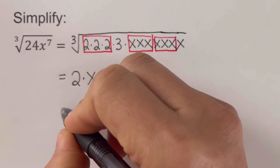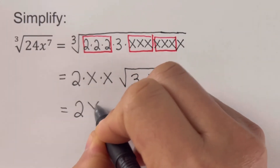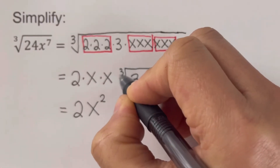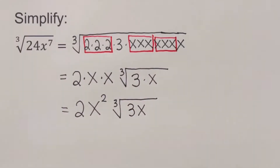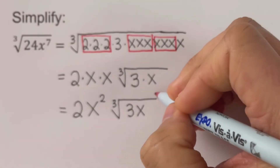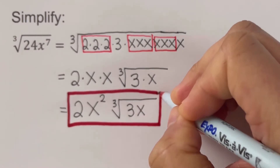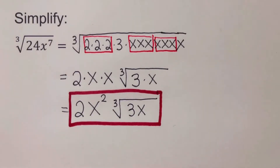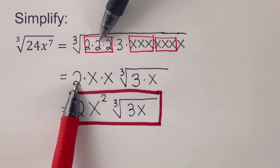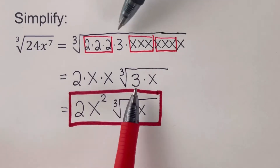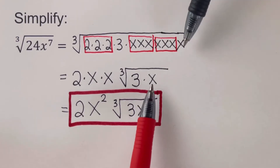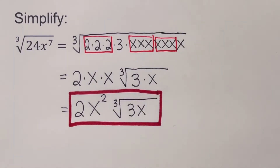We simplify: 2 outside, and since there are two x's outside, that's 2x squared, times the cube root of 3x. So the simplified version of the cube root of 24x to the 7th is 2x squared times the cube root of 3x. Note that we assume the variables have positive values in these problems.